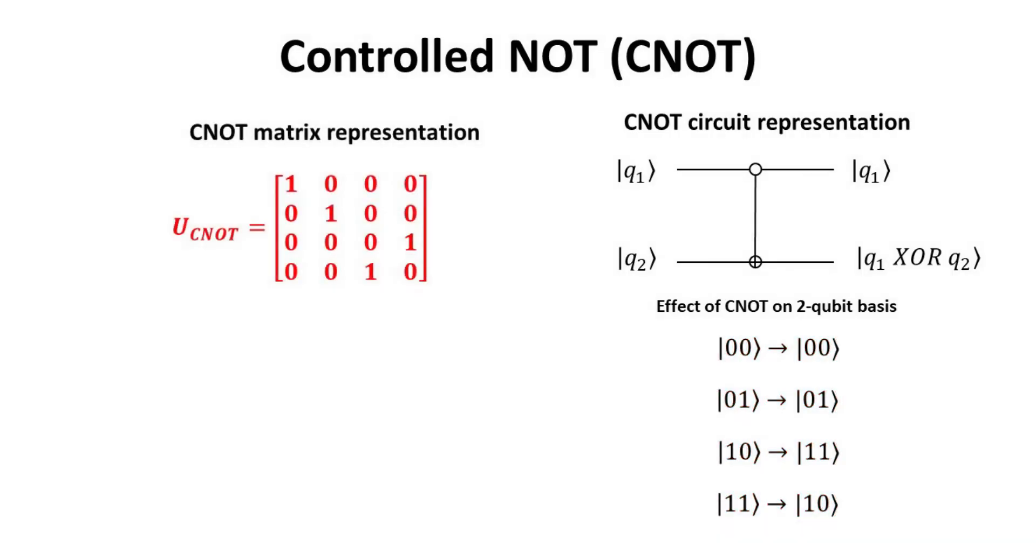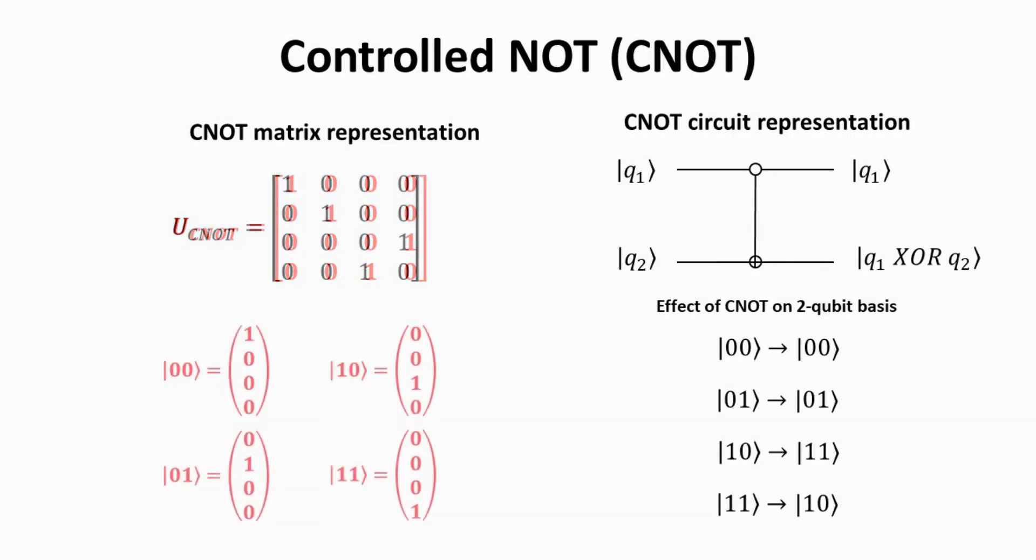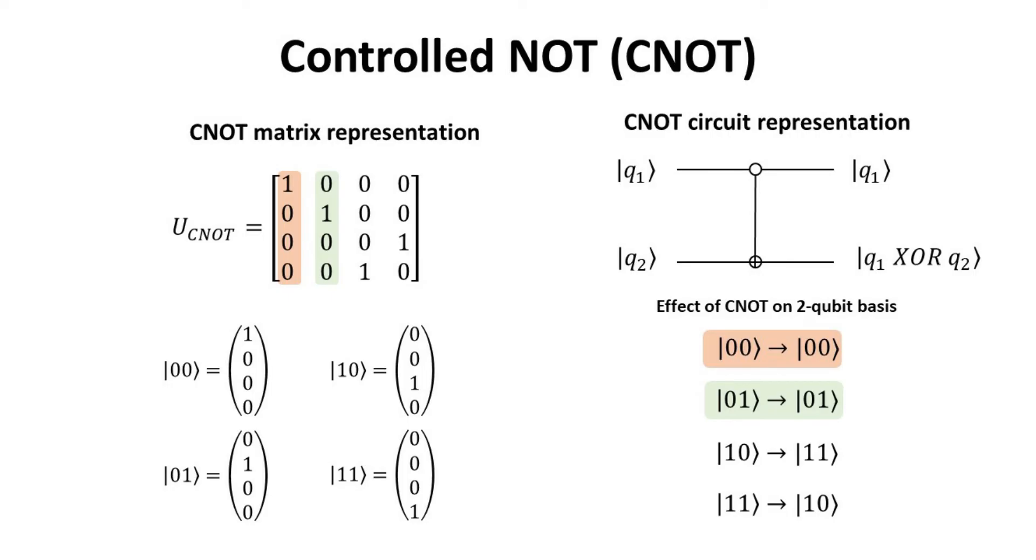Knowing how the basis vectors change, we can come up with the matrix form for the CNOT gate as follows. To see this, we recall the column vector form of the basis states. Each column of the matrix form of linear transformations can always be interpreted as how each of the basis vectors change after its application. Notice that the first basis does not change at all, and the same is true for the second one. Now, the third and fourth basis states are switched. This explains the matrix form of the CNOT gate.